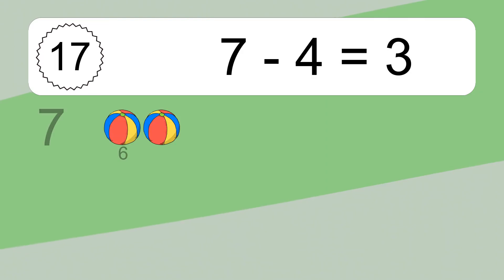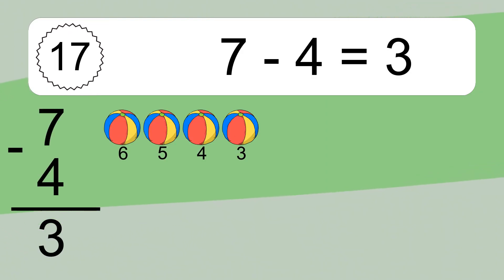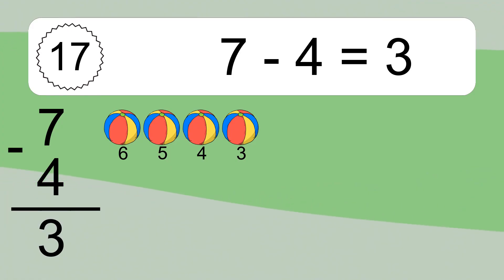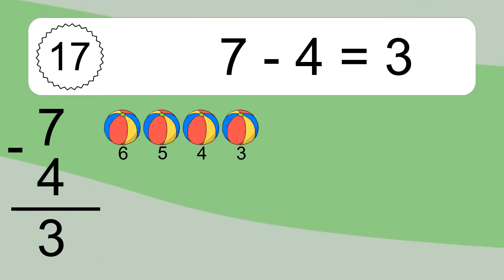7 minus 4 equals 3. Let's count it: 6, 5, 4, 3. 20 minus 19 equals what?